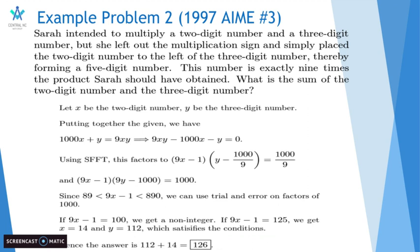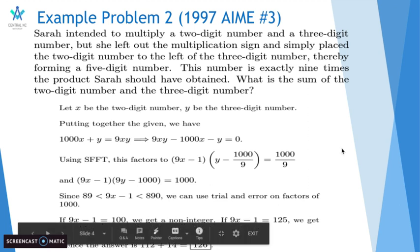If 9x minus 1 is equal to 100, we get a non-integer for the y value. But if 9x minus 1 is equal to 125, we get x equals 14, and y equals 112, which satisfies the conditions. Hence, the answer is 112 plus 14, which is equal to 126.